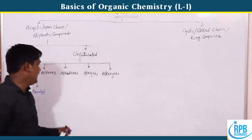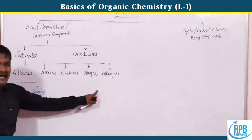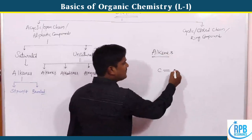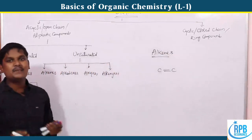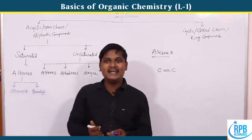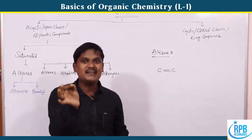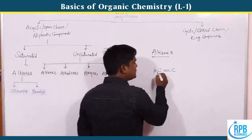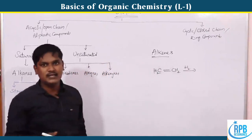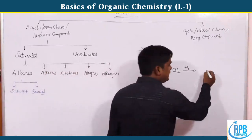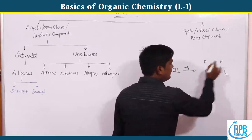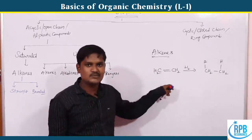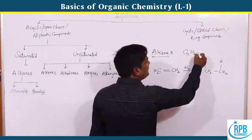Now coming to the unsaturated part — alkenes, alkadienes, alkynes, and alkenines. Alkenes have carbon-carbon double bonds. Unlike single bonds in alkanes, double bonds are prone to addition reactions, making alkenes unsaturated. For example, hydrogen, halogens, or hydrohalogens can be added across the double bond.